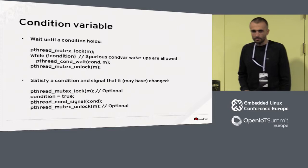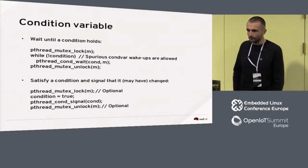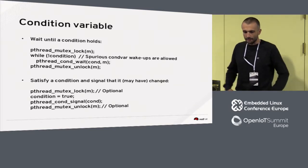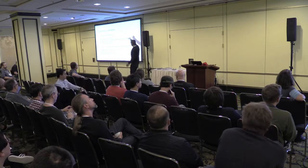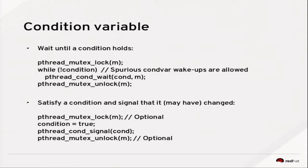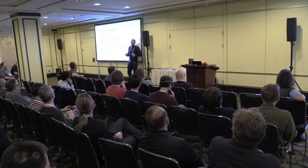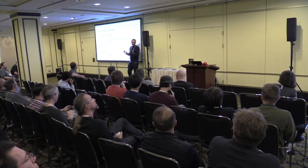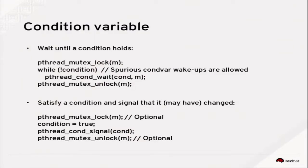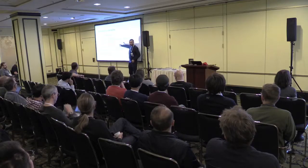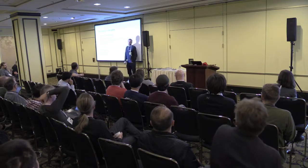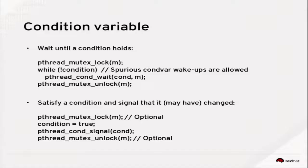Quick reminder of where the condition variable is. It's a way to wait for a certain condition to hold. You have a thread that grabs a lock, and while the condition does not hold, it calls pthread_cond_wait. This atomically releases the mutex and starts waiting, and returns only after reacquiring the mutex. The signaling side then optionally acquires the lock, sets the condition to true, and signals. We have a while loop because pthread_cond_wait is allowed to wake up spuriously.